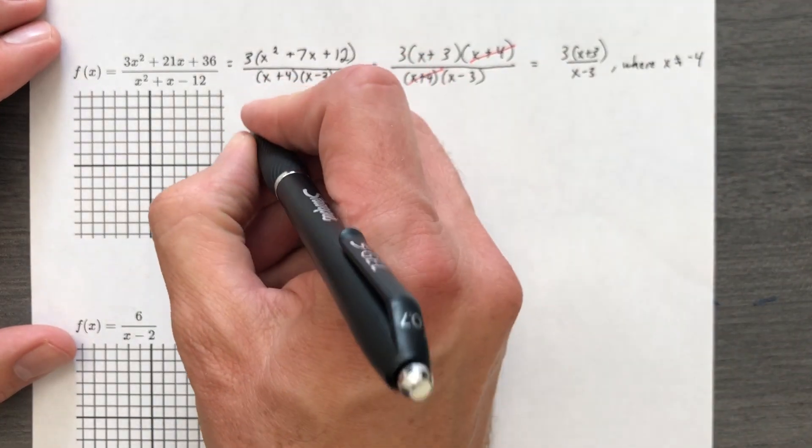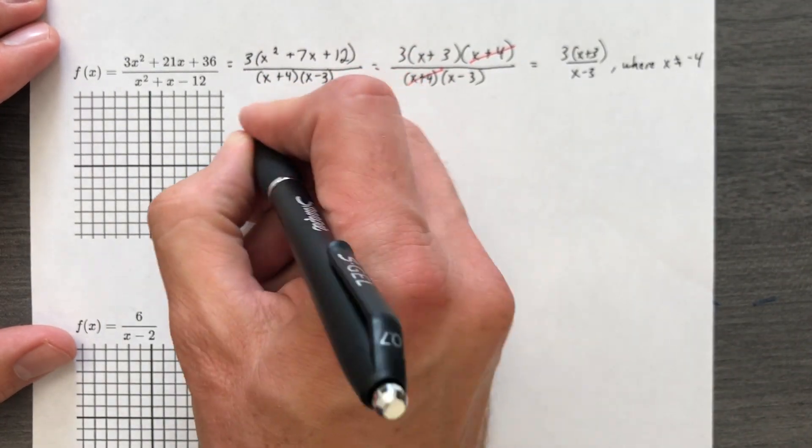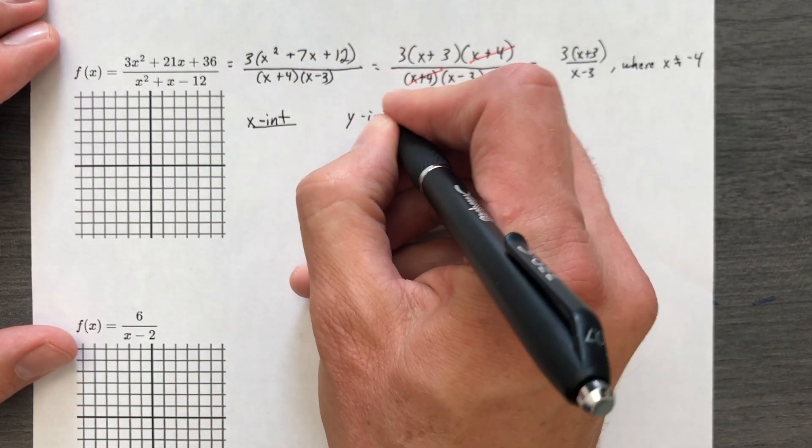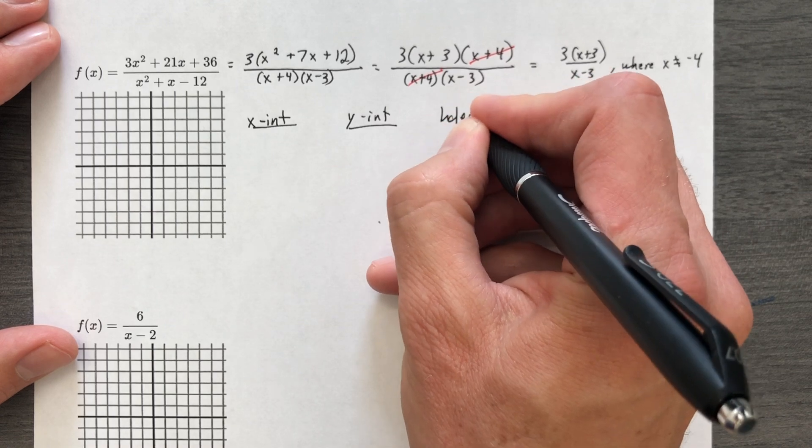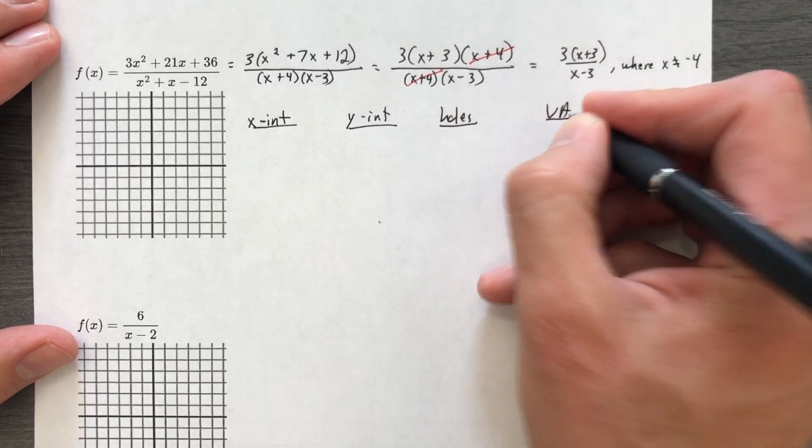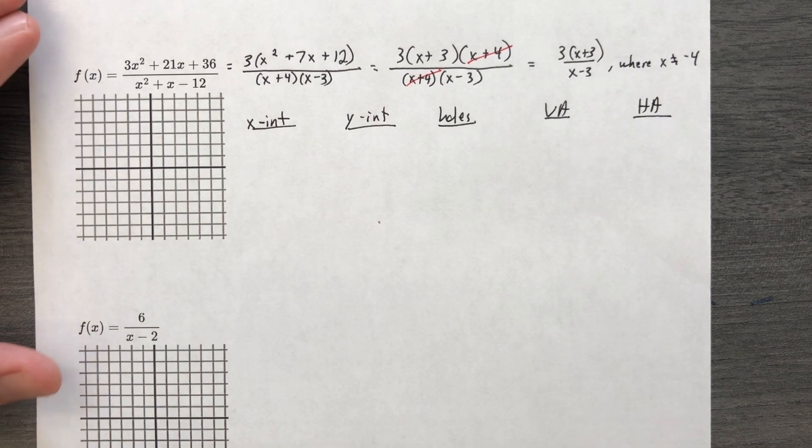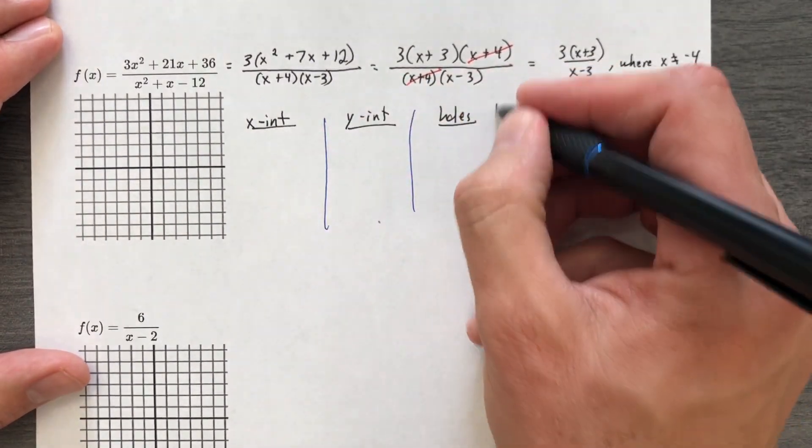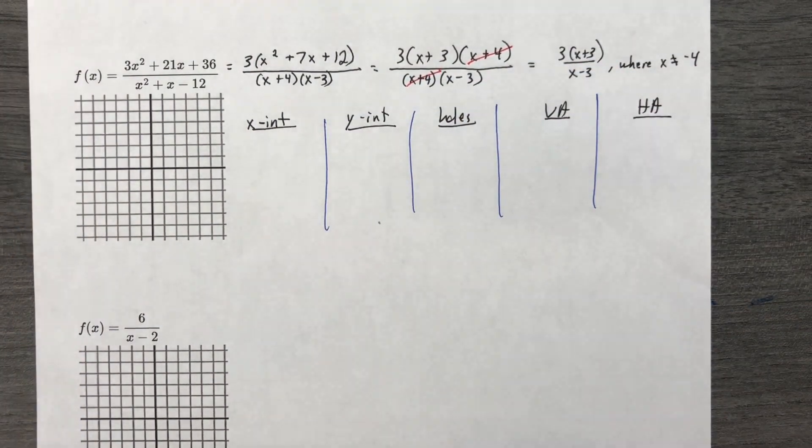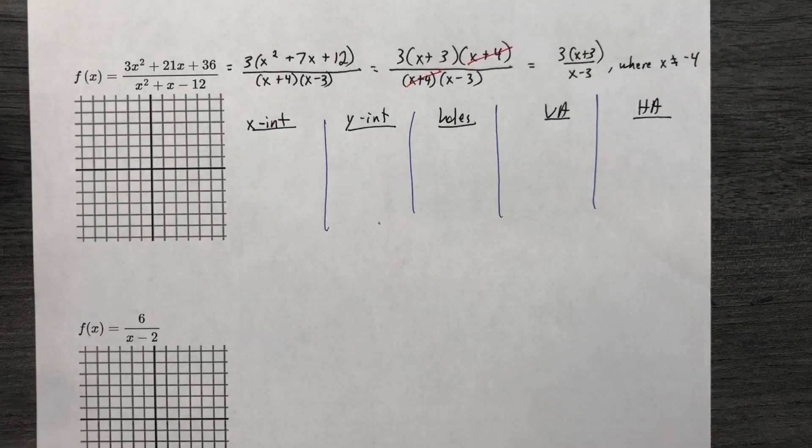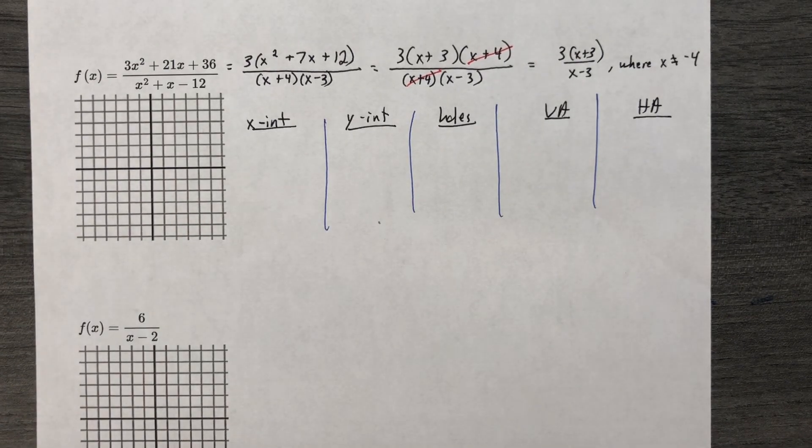All right, let's find everything. x-intercept, y-intercept, holes in the graph, vertical asymptotes, horizontal asymptotes. All right, let's draw vertical lines, and we're going to do this. It's not annoying at all, right? Okay, it is reduced first, so we're ready to go.